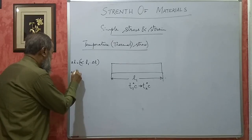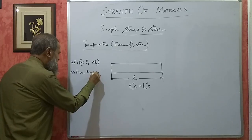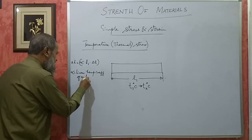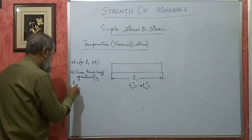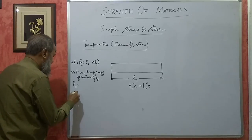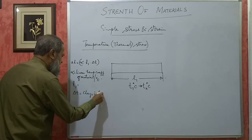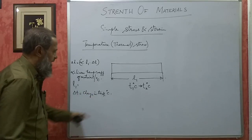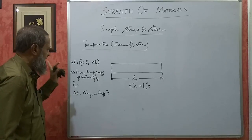Here, alpha means linear temperature coefficient of the material, per degree centigrade. L1 is the initial length in mm. Delta T means change in temperature — it may be T1 minus T2 or T2 minus T1 depending upon which is bigger. This gives you the increase or decrease in length the rod wants.